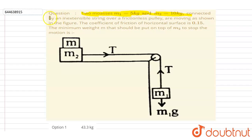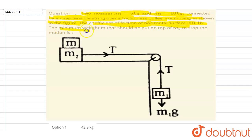Hello everyone. Two masses m1 and m2 are connected by an inelastic string over a frictionless pulley and are moving as shown in the figure. The coefficient of friction between the horizontal surface and the block is 0.15. We need to find the minimum weight m that should be put on m2 to stop its motion.